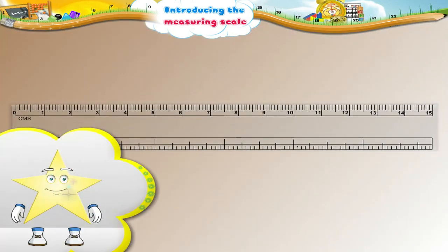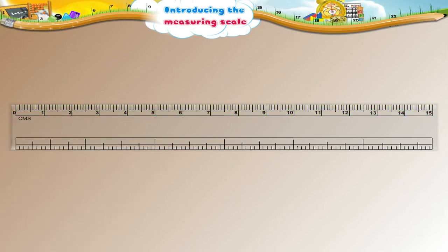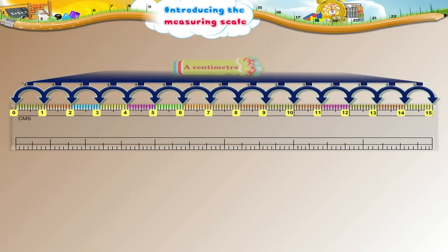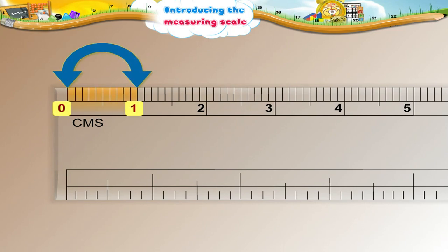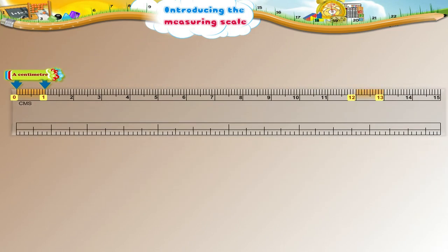Look at this scale. Do you notice some markings and numbers on it, Starry? Yes, of course. There are numbers up to 15. Each number shows a distance called a centimeter. For example, 0 to 1 is a centimeter, 12 to 13 is a centimeter, and 5 to 6 is also a centimeter.